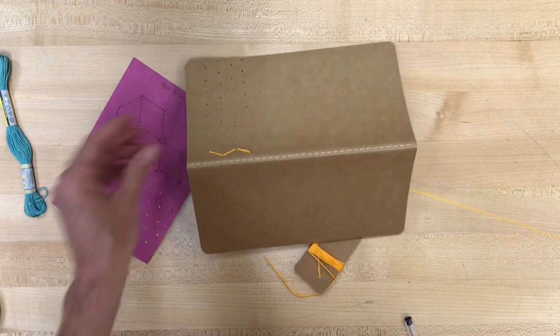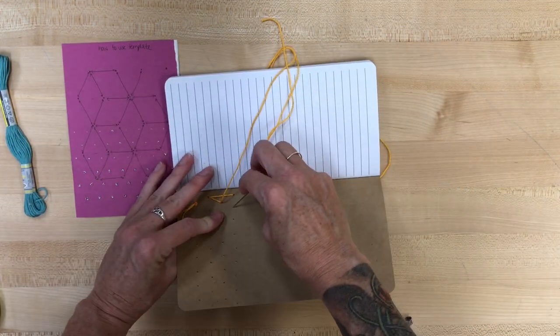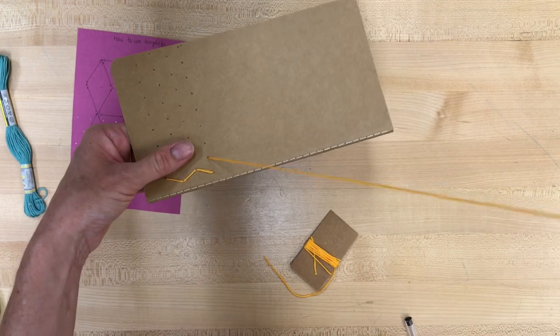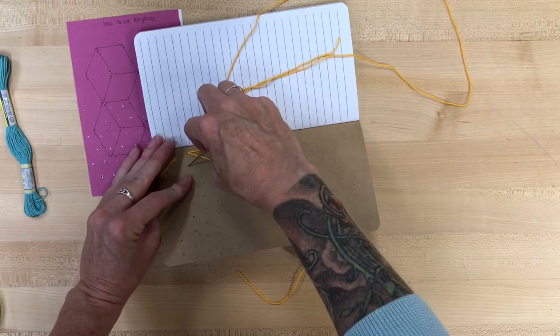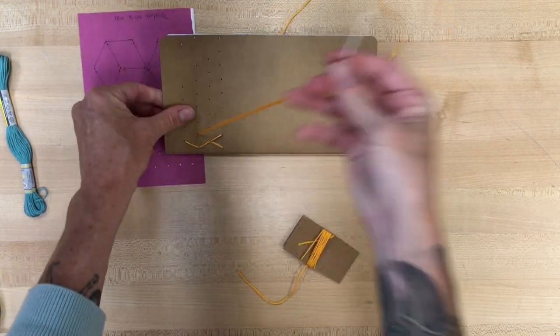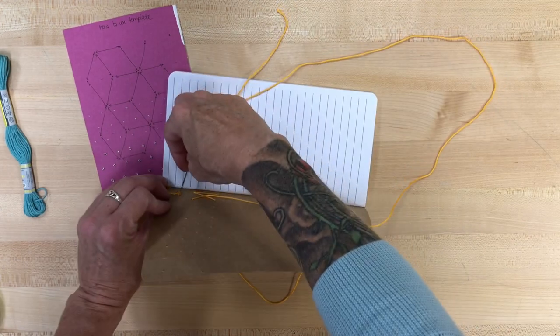If I do another zigzag pattern going the other direction, that will give me that sort of up and down row of diamonds that starts off the geometric pattern. So we'll go ahead and do that.